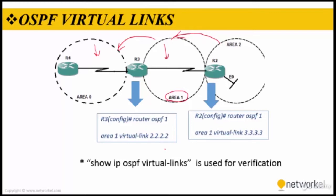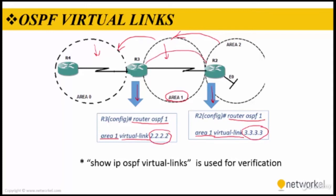To resolve this problem, we need to use OSPF virtual links. The configuration is made on router 3 and router 2. We type 'router ospf [process-number]', then define area 1 — the area directly connected to area 0 — on both routers, then type 'virtual-link'. For router 3, we enter the router ID of router 2, and for router 2, we enter the router ID of router 3. To verify, use the 'show ip ospf virtual-links' command.